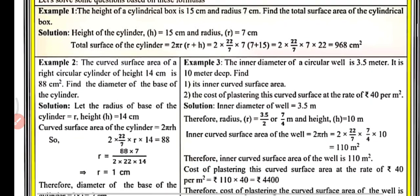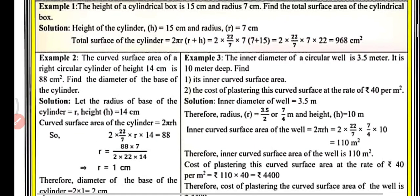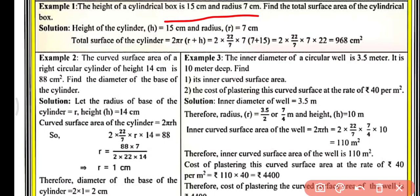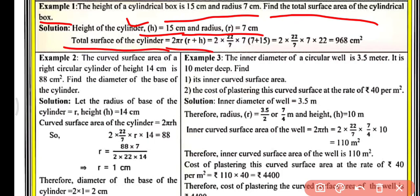Example 1: The height of a cylindrical box is 15 cm and the radius is 7 cm. Find the total surface area. We are given h = 15 cm and r = 7 cm. Using total surface area = 2πr(r + h) and substituting all values, we get the total surface area as 968 cm².